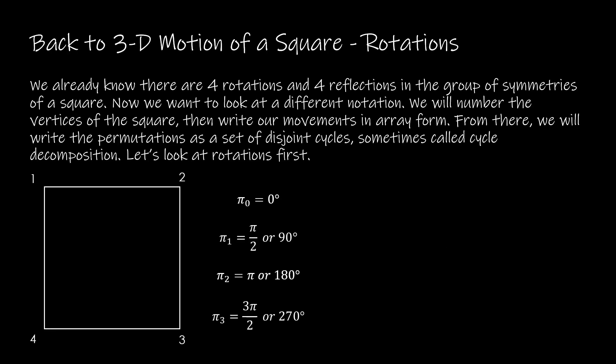We already know that there are four rotations and four reflections in the group of symmetries of a square. I want to look now at a different notation — we're going to look at permutations. This is new for us, though perhaps you've studied it in other courses. We're going to start by looking at array notation.